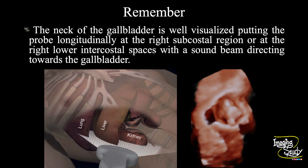Now the take-home message. The neck of the gallbladder is well visualized by putting the probe longitudinally at the right subcostal region or at the right lower intercostal spaces with the sound beam directed towards the gallbladder. This is a good approach to find out tiny stones at the neck region, which are commonly missed in practice.